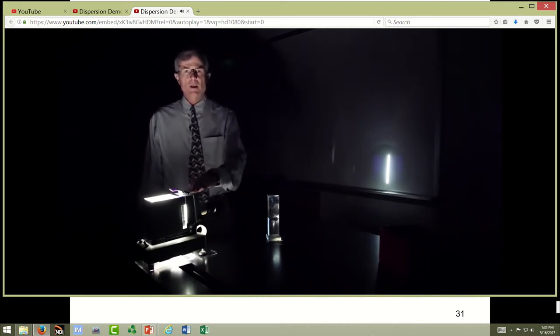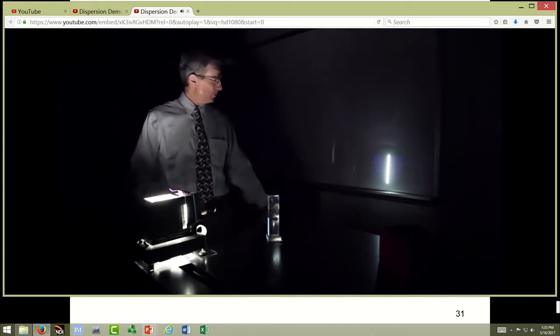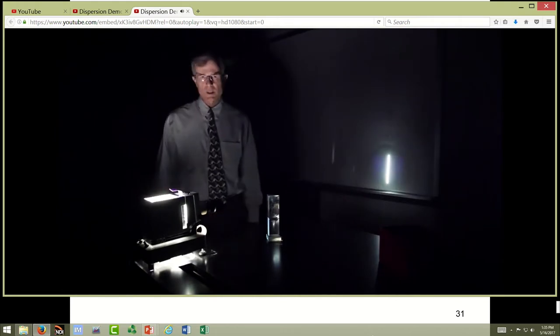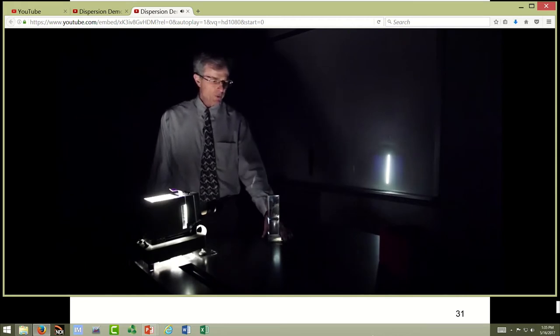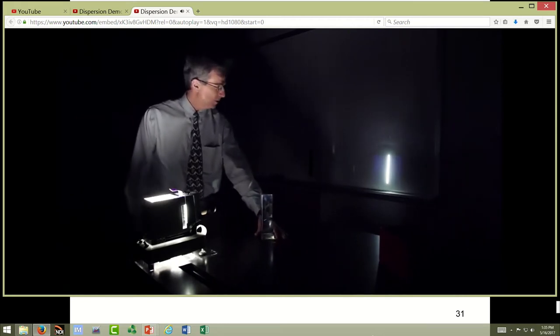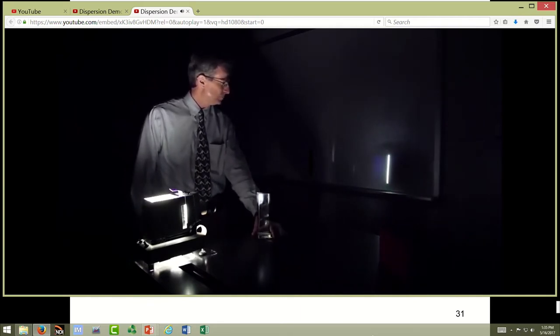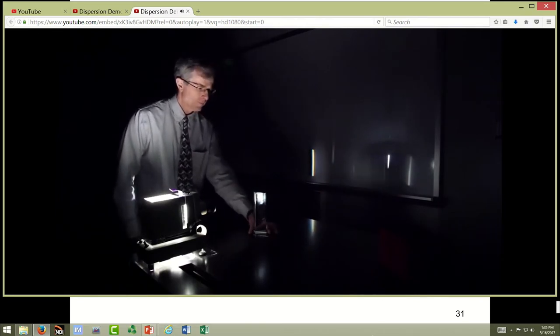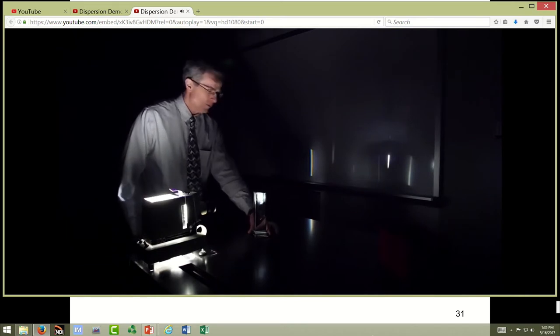What I have here is a projector and I've got a slide in the projector that produces just a vertical slit of light. And I also have a prism here that I will move now in front of that vertical slit of light to produce this.